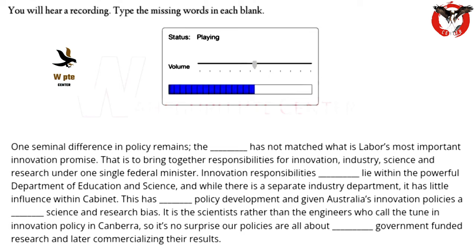This has hampered policy development and given Australia's innovation policies a distinctly science and research bias. It is the scientists rather than the engineers who call the tune in innovation policy in Canberra, so it's no surprise our policies are all about boosting government-funded research and later commercializing their results.